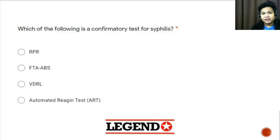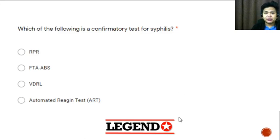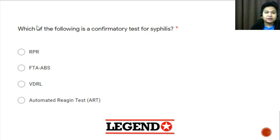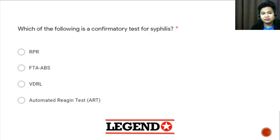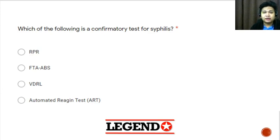Hi everyone. For this video we'll be discussing syphilis serology — the non-treponemal and treponemal tests used in the laboratory diagnosis of syphilis. We have a question: which of the following is a confirmatory test for syphilis? A. RPR, B. FTA-ABS, C. VDRL, or D. Automated reagent test. We'll go back to this question after our discussion.